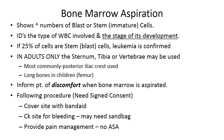Bone marrow aspirations provide the number of blast or stem cells within the bone marrow and identify the type of white blood cell involvement and stage of development. If 25% of cells are stem or blast cells, leukemia is confirmed. In adults, the sternum, tibia, or vertebrae may be used, but most commonly the posterior iliac crest is used. In children those sites are contraindicated and long bones such as the femur are preferred.